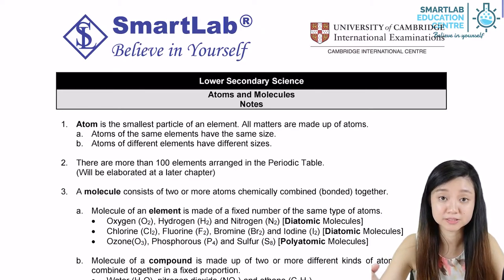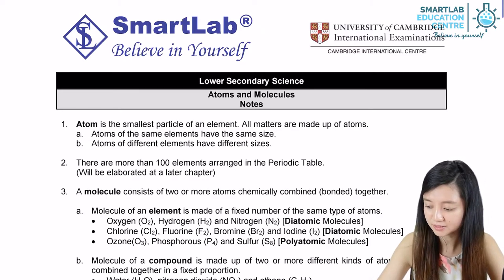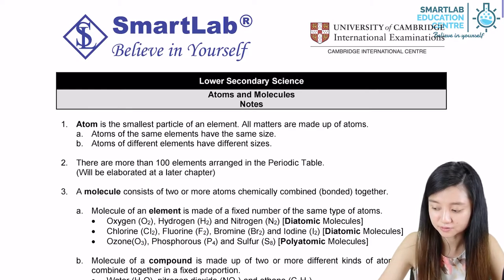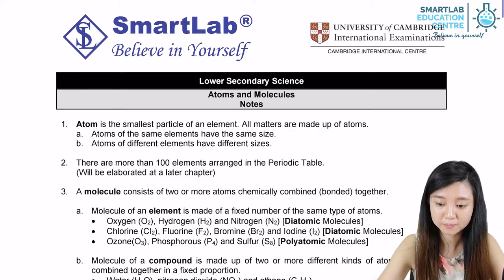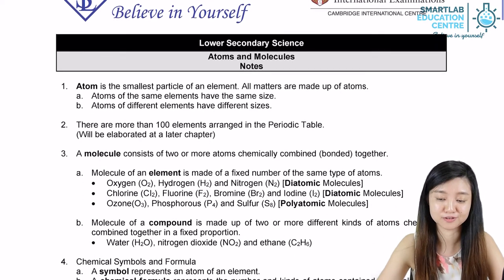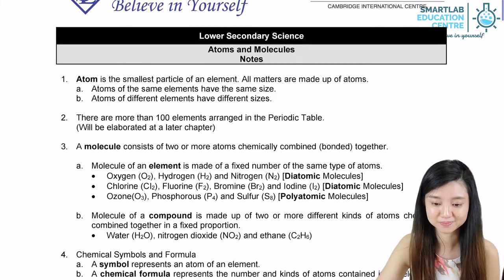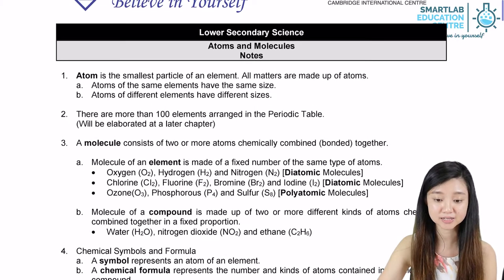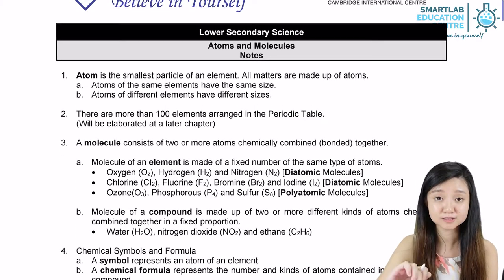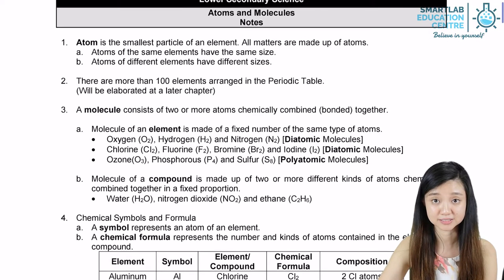An atom is the smallest particle of an element. It is indivisible and cannot be broken down further. All matter is made up of atoms. Atoms of the same element have the same size, and atoms of different elements have different sizes.